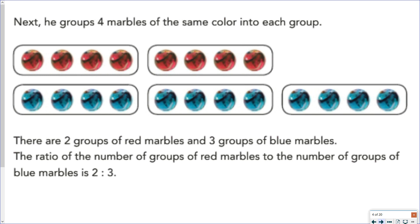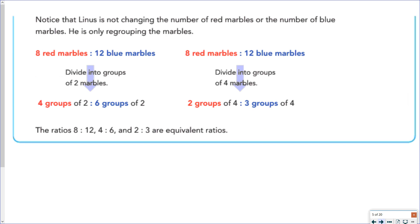But once again, the actual number of marbles did not change. So therefore, 8 to 12, 4 to 6, and 2 to 3 are known as equivalent ratios. They are ratios that tell you the same pieces of information — you're just looking at it slightly differently.